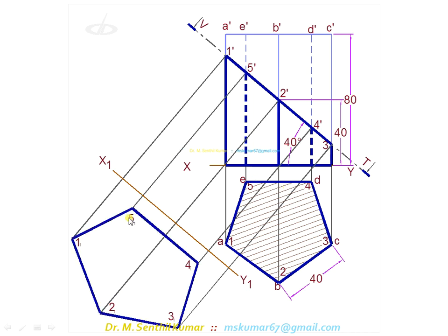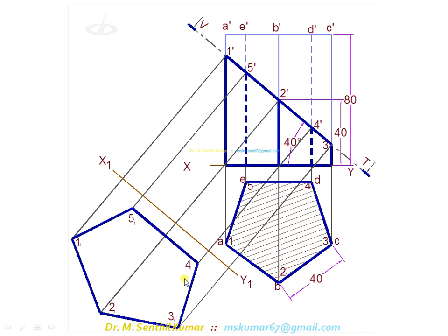Now darken and join all the points in sequence — that gives you the true shape of the section. Then hatch that area. The hatching lines should be thin continuous line type, inclined at some angle. This is the final answer.